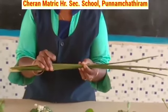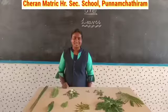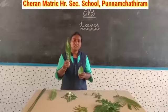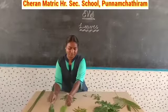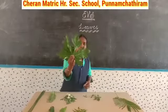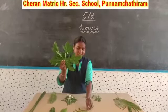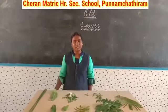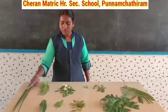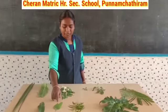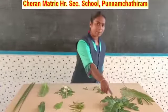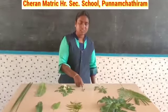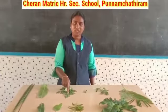Coconut leaves. Children, are all the leaves the same? No. Some leaves are long, some leaves are short. Some leaves are big. Some leaves are small. Okay children, let's see again one time: coconut leaves, mango leaves, pepper leaves, neem leaves, papaya leaves.